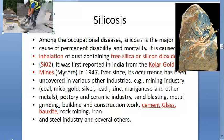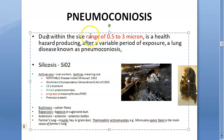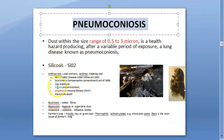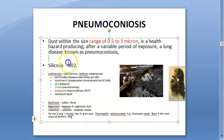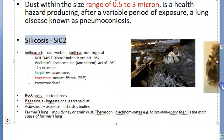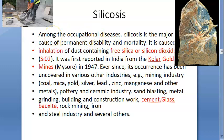In this video, let's look at silicosis. In pneumoconiosis — that is, occupational lung diseases — dust with a size range of 0.5 to 3 microns is a health hazard and can lead to occupational lung diseases. Examples of pneumoconiosis include silicosis, anthracosis, basinosis, bagassosis, asbestosis, and farmer's lung. In this video we focus only on silicosis, which is the most important pneumoconiosis.